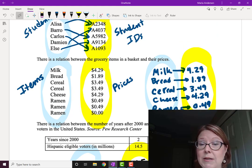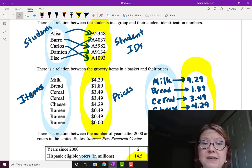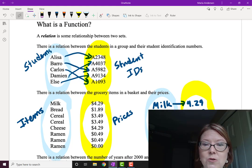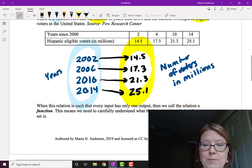We scan the item at the grocery store, and we get the price. We ask the student for their ID number, and they tell us. So that first set is the input set.